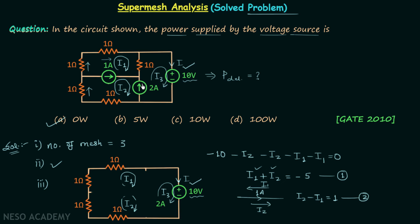Now we analyze the branch having the 2 ampere current source. The 2 ampere current flows in this branch with I2 flowing in the opposite direction and I3 flowing in the same direction. This means I3 minus I2 equals 2. This is Equation 3.